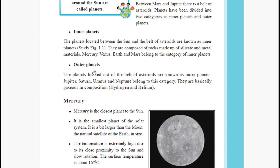Inner planets are located between the sun and the belt of asteroids and are composed of silicate and metal materials. Outer planets — Jupiter, Saturn, Uranus, and Neptune — are located beyond the asteroid belt and are basically gaseous in composition, especially hydrogen and helium. Next lesson we will meet with these planets in more detail — see you soon!